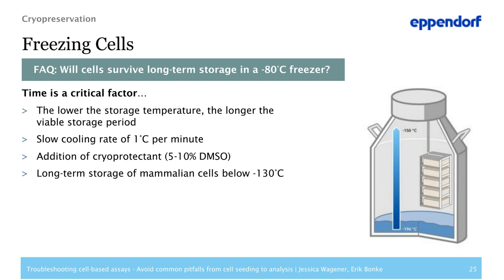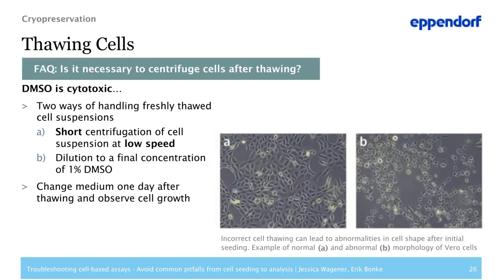A slow cooling rate and the addition of cryoprotectants such as DMSO prevents deformation of ice crystals. When thawing cells, a common question is whether the cell suspension needs to be centrifuged to remove the DMSO, which is cytotoxic to a certain degree. There are two ways: you can centrifuge and discard the DMSO-containing supernatant, or you can dilute the cells with fresh medium until the suspension has a final concentration of 1% DMSO. A medium exchange the day after thawing is recommended to remove any dead cells or debris.